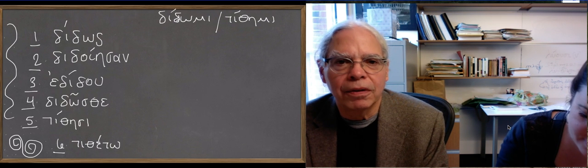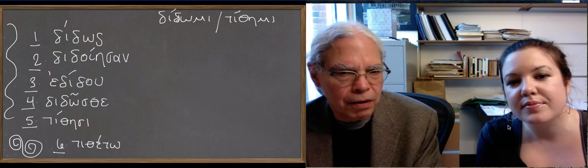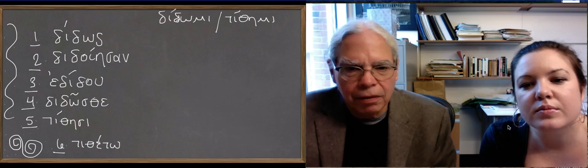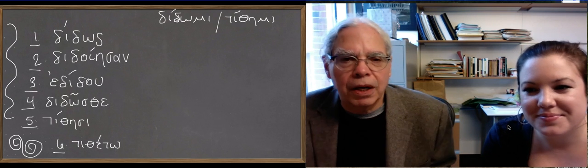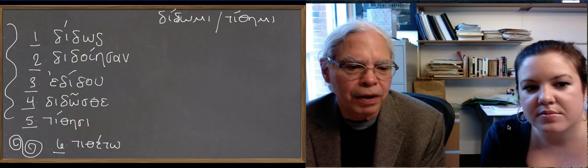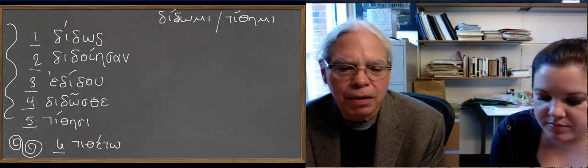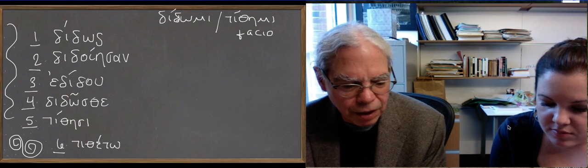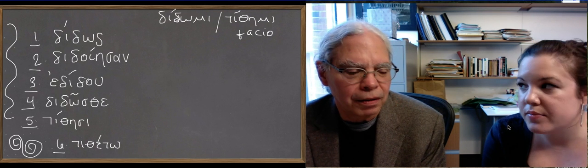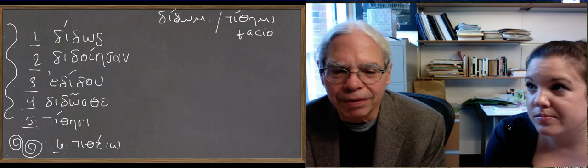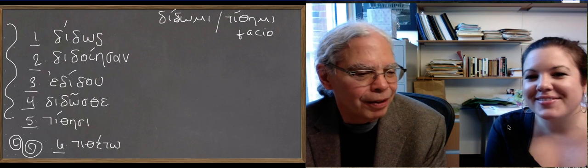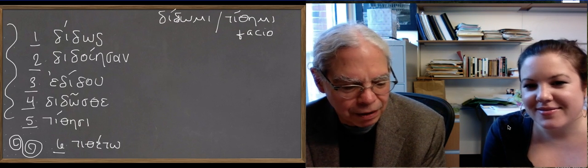δίδωμι is the verb to give. And τίθημι is a verb that originally means to establish something, and it's cognate with the Latin verb facio, it also means to make. We have lots of cognates of δίδωμι, like donate, and dative is actually one because a sentence with the dative is a sentence about giving.